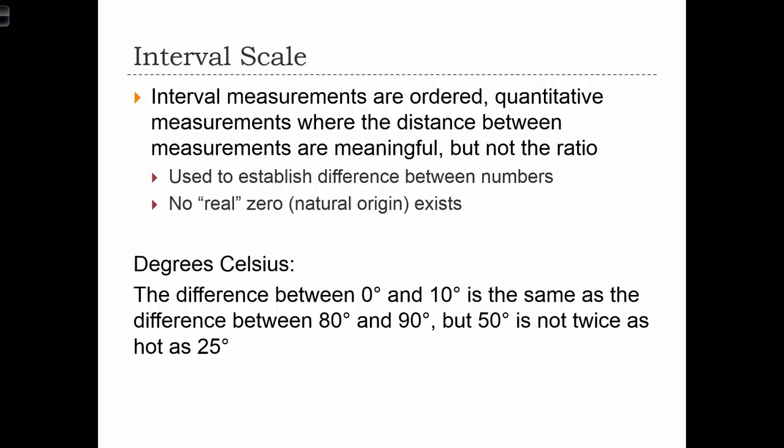Interval scale measurements are ordered, but they're quantitative measurements. So we're using numbers to measure an interval scale. And the distances between our measurements are meaningful. So we now know which are higher. Between two values, we know which one is higher, but we also know by how much it is higher. But what we don't have is a ratio. You cannot form a ratio between two data values that are measured on an interval scale. So the classic case, and pretty much the only case that you're ever going to see in this class, and probably out in the real world as well, is temperature. Temperature is one of the only things that is measured on an interval scale.